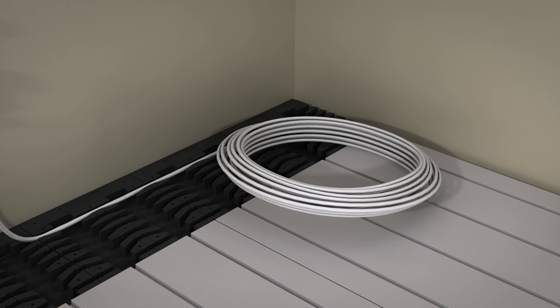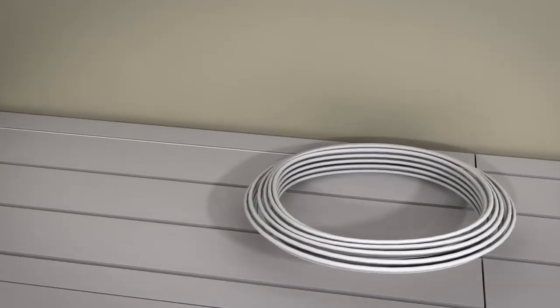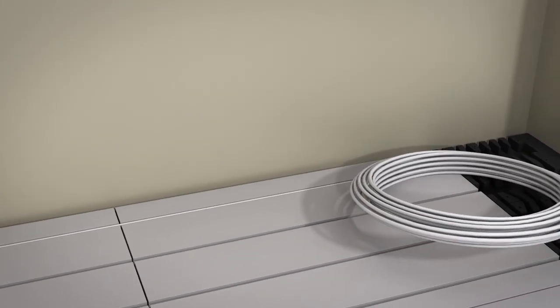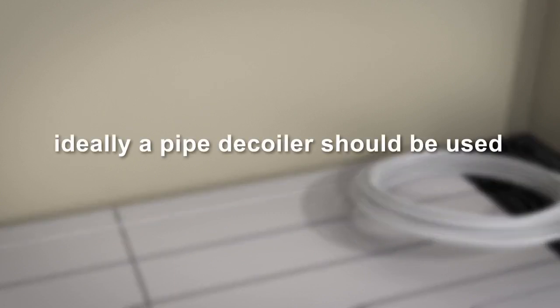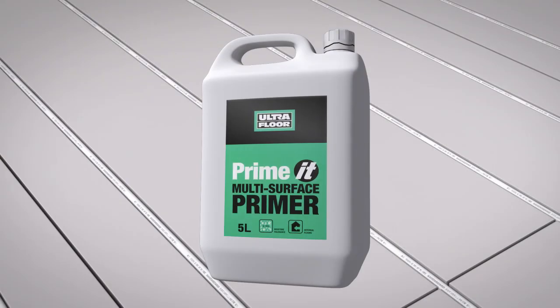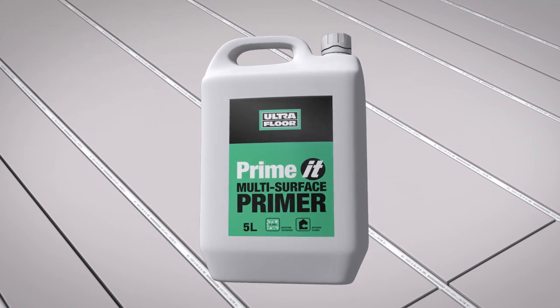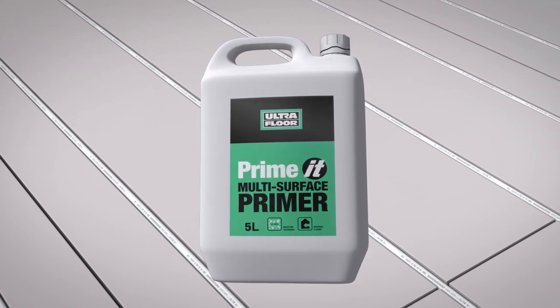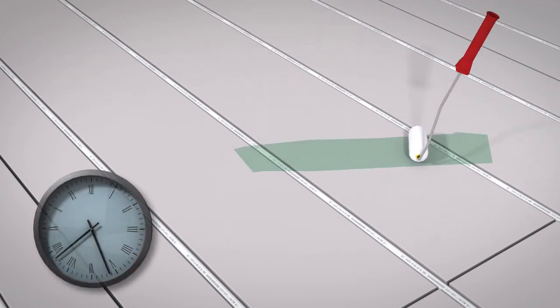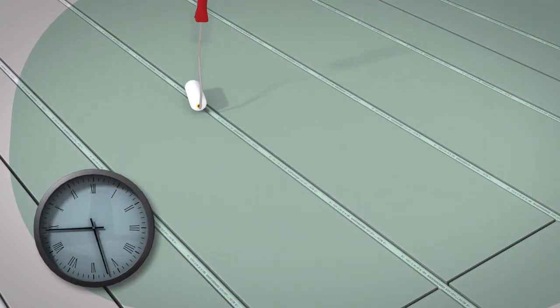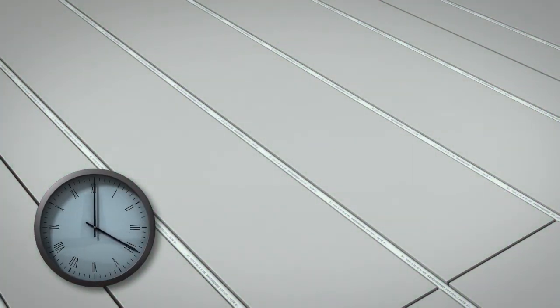For ease of installation, lay the pipe flat and unroll whilst the coil is on its side, not with the coil in an upright position. This ensures that the pipe does not spring out of the board's grooves. Ideally, a pipe decoiler should be used. The panels can then be primed using the Ultra MSP Multi Surface Primer. The primer can take between 30 minutes and 3 hours to dry, depending upon room temperature.